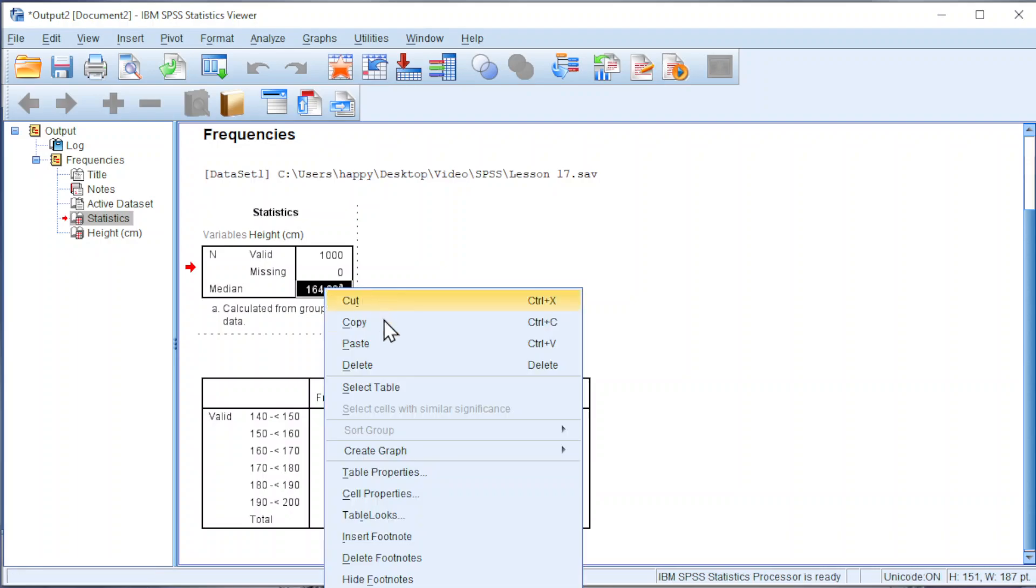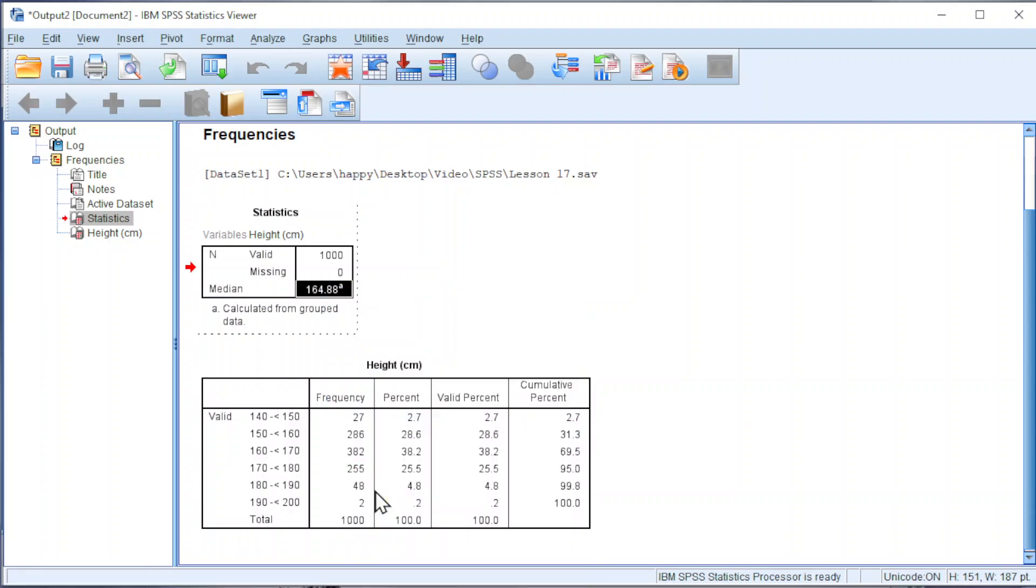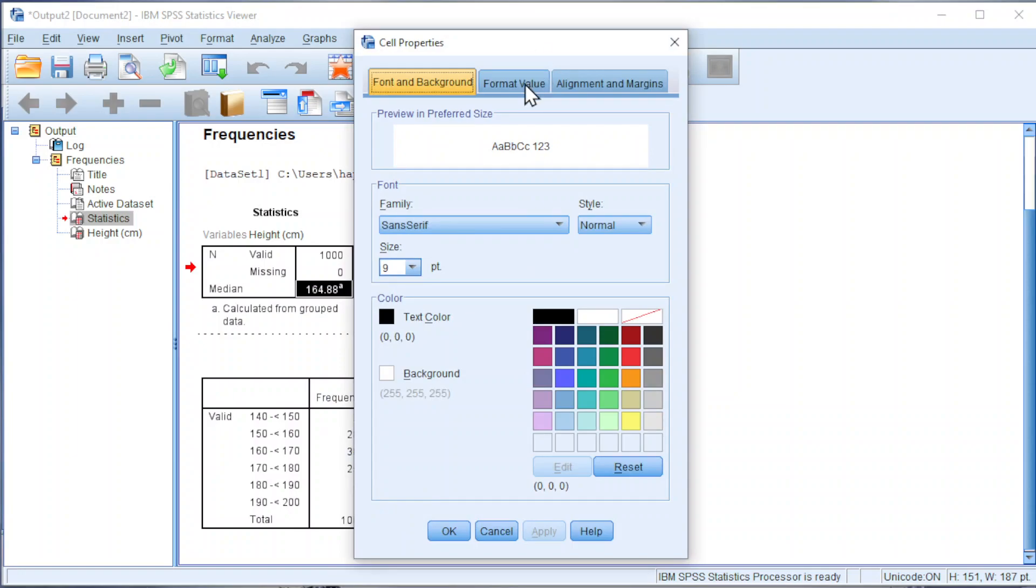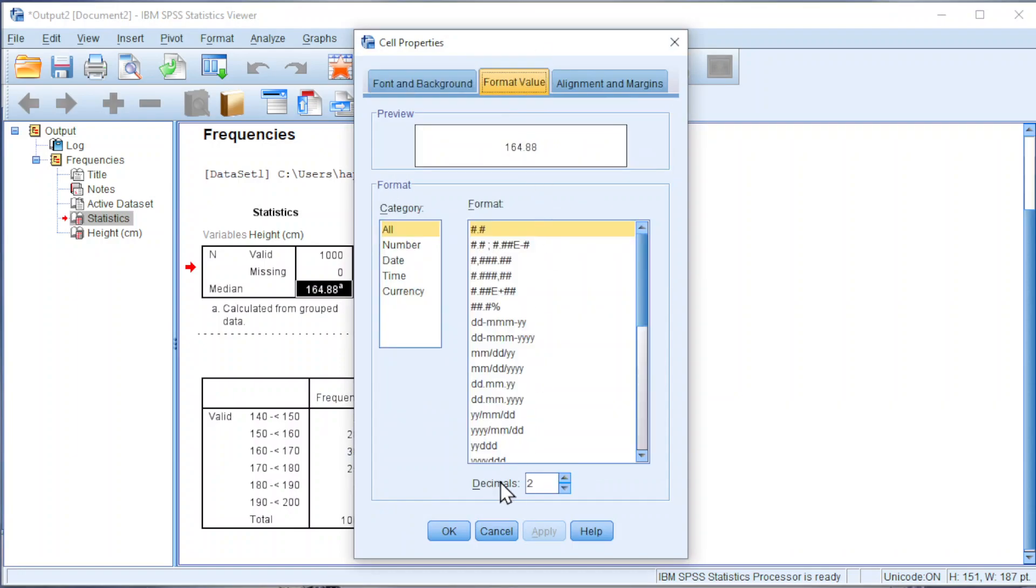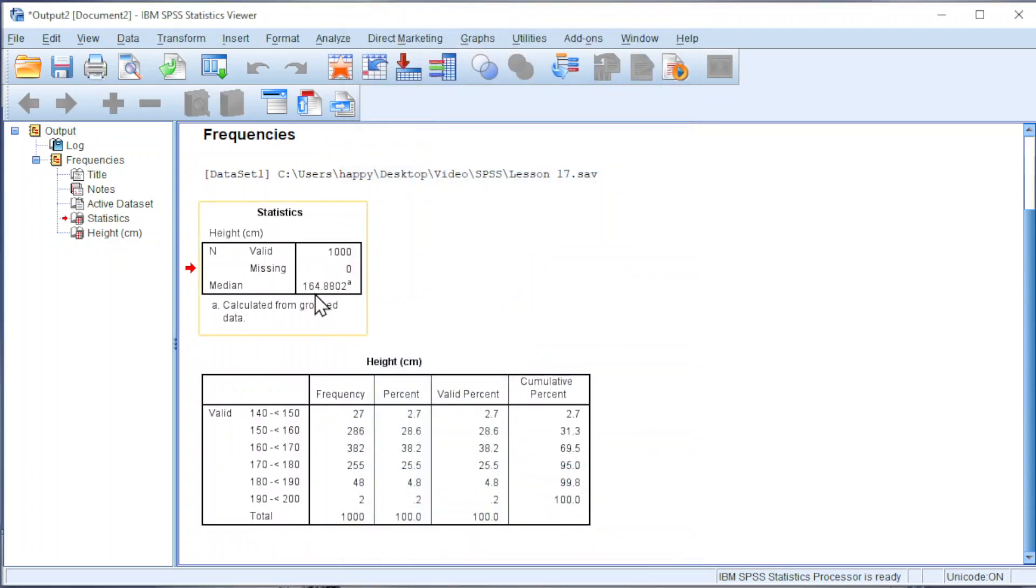Right-click the value. Look for cell properties. Change the number format. Change the decimals to desired decimal places. Click on OK. And we should obtain the correct format.